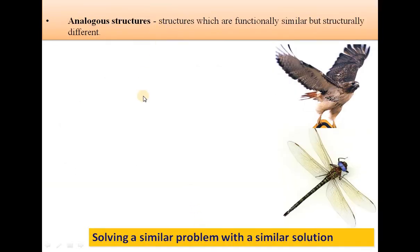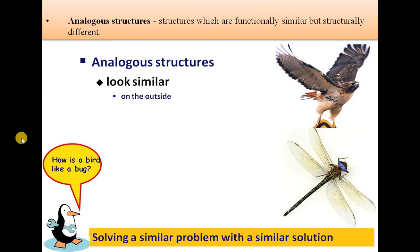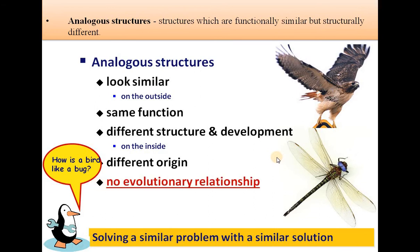Now, what are analogous structures? Analogous structures are exactly different from homologous structures — these are structures which are functionally similar but structurally different. For example, the wings of a bird and an insect look similar on the outside and perform the same function, but they have different structure and development on the inside. So they have a different origin and do not have an evolutionary relationship — they are simply solving a similar problem with a similar solution.